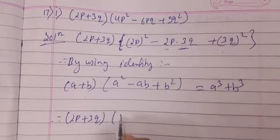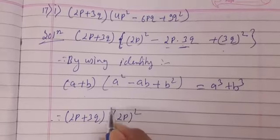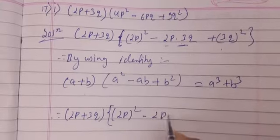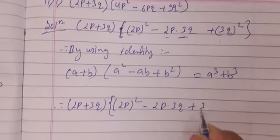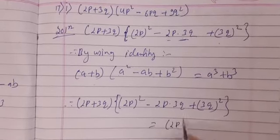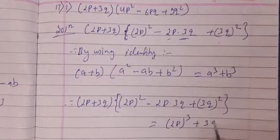So we will write therefore (2p + 3q)((2p)² - 2p × 3q + (3q)²) is equals to what? (2p)³ + (3q)³.